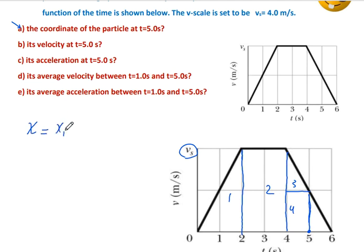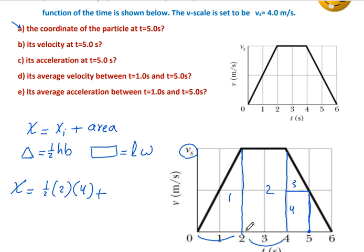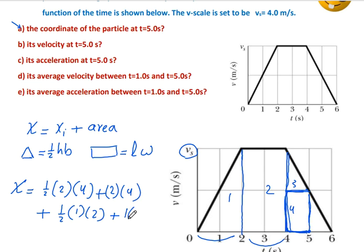X equals initial X plus area. Triangle area equals half height times base. Rectangle equals length times width. So, X equals half base times 4, plus second shape 2 times 4, plus third shape half base 1 times 2, plus the last rectangle 1 times 2. The displacement is 15 meters.